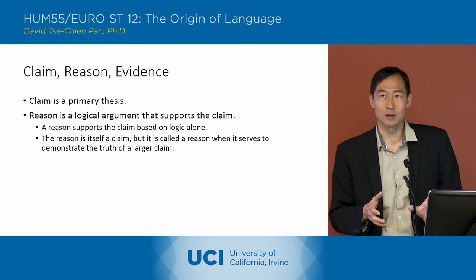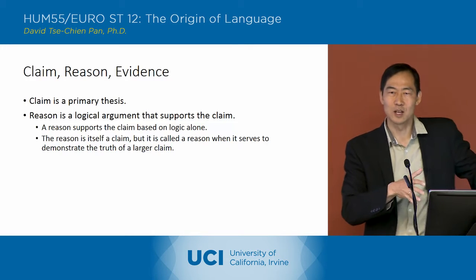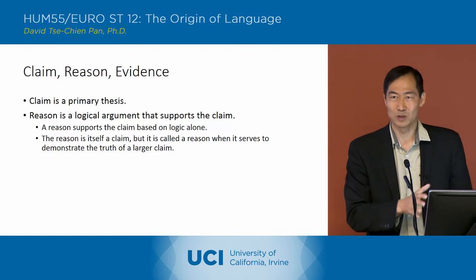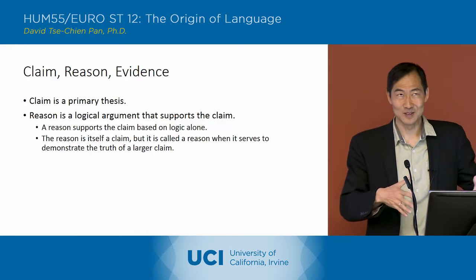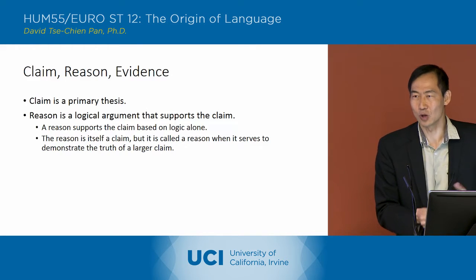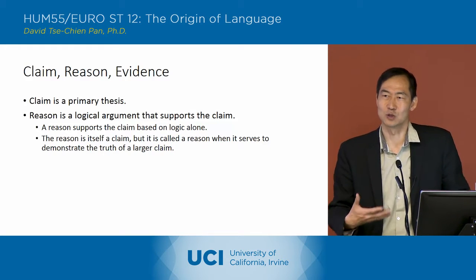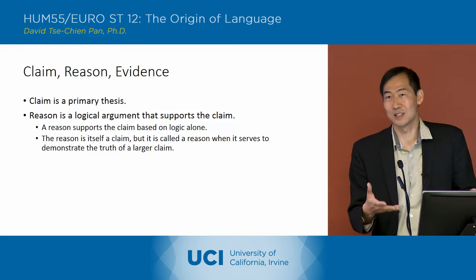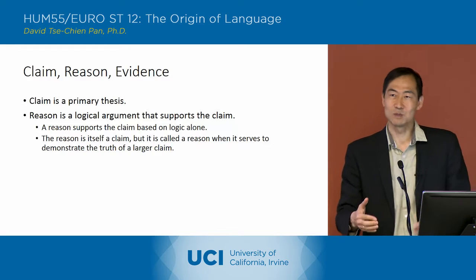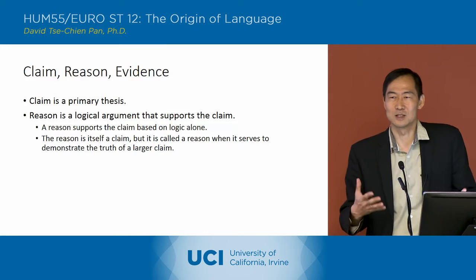The reason is called a reason because it's serving to demonstrate the truth of the claim. So it's not the final argument you're trying to make, but rather one of the arguments you're making in order to prove the final claim. There's a relationship between reason and claim — the reason is also a claim in its own right to the extent that you're trying to demonstrate that reason as being itself something that's true. So reason is basically a kind of claim that is being used to support another claim.